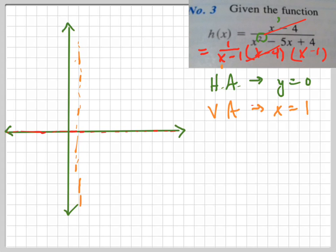There's also a hole, or removable discontinuity, at x equals 4. Let's plug 4 back into our modified equation—we get 1 over 3. So the hole is at (4, 1/3). That would be right about there on the graph.